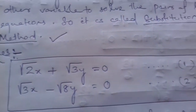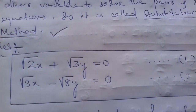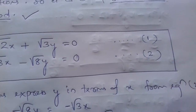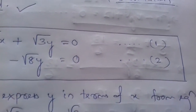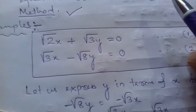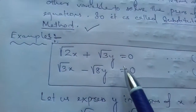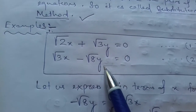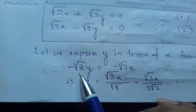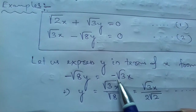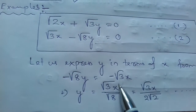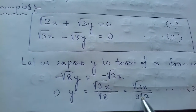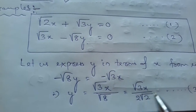The example is: √2x + √3y = 0, that is equation 1. Then √3x − √8y = 0, that is equation 2. Let us express y in terms of x from equation 2.